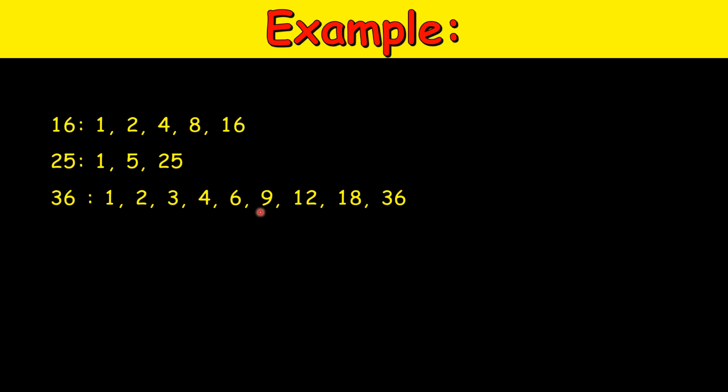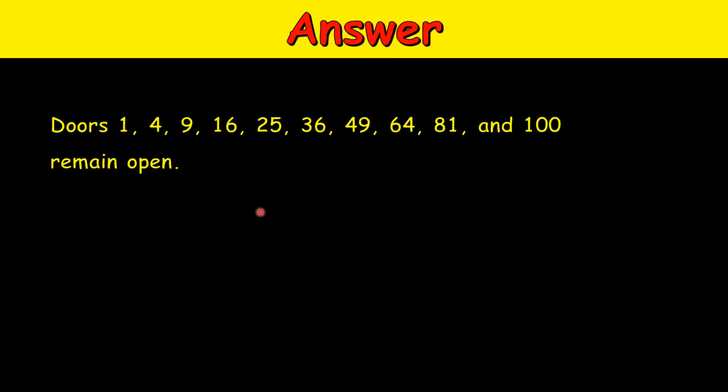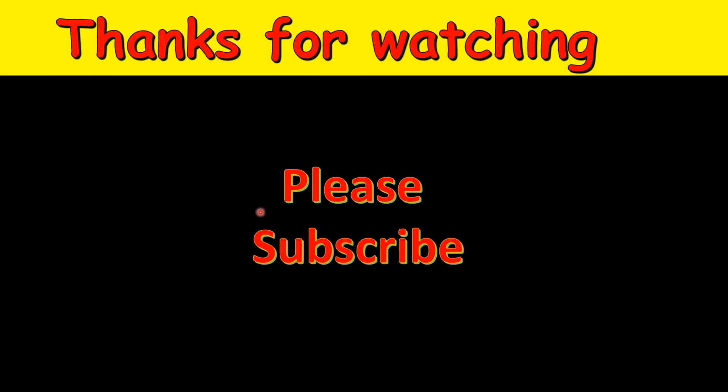So the answer is: all perfect square numbers from 1 to 100 are toggled an odd number of times because they have an odd number of factors. The doors that remain open are: 1, 4, 9, 16, 25, 36, 49, 64, 81, and 100. All other doors are toggled an even number of times and remain closed. I hope you enjoyed this puzzle — if you liked it, please subscribe to the channel. Thanks for watching!